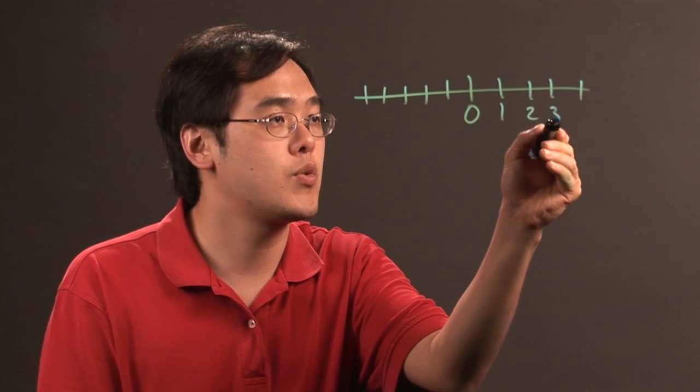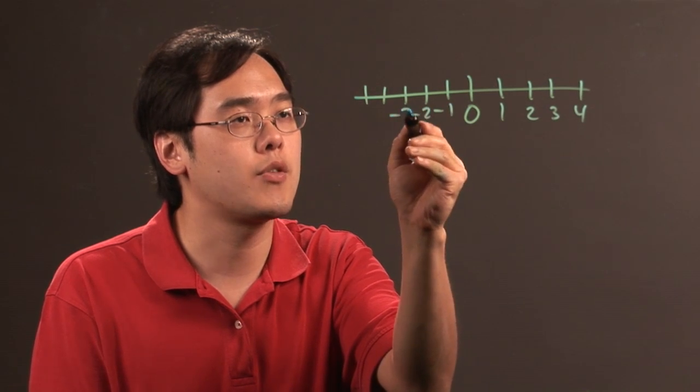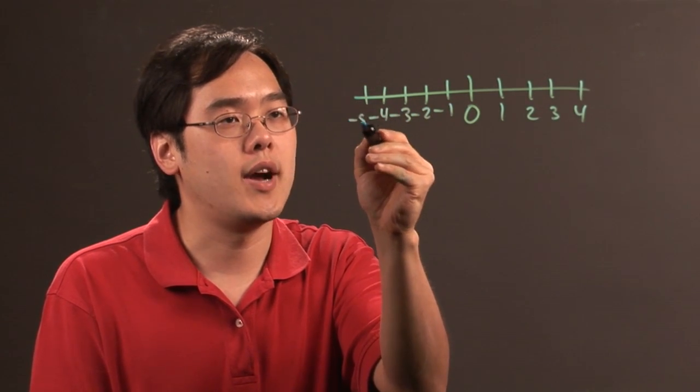So, if you have one, two, three, four going the other way, negative one, negative two, negative three, negative four, negative five, and so on.